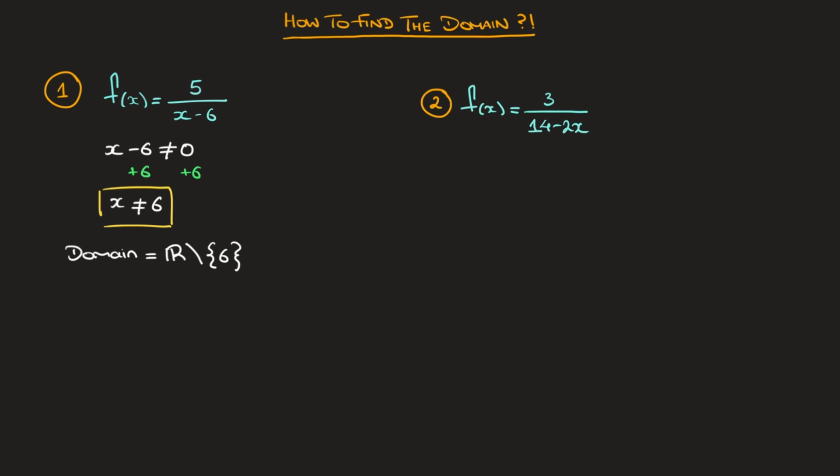And we could have found this domain by looking at this function's graph. Indeed, if you use your graphical calculator to plot the curve y equals 5 over x minus 6, then the curve you get should look something like this. Looking at this curve as we go from left to right, we can see that it comes in two branches. Indeed, this curve splits into two across the value x equals 6.